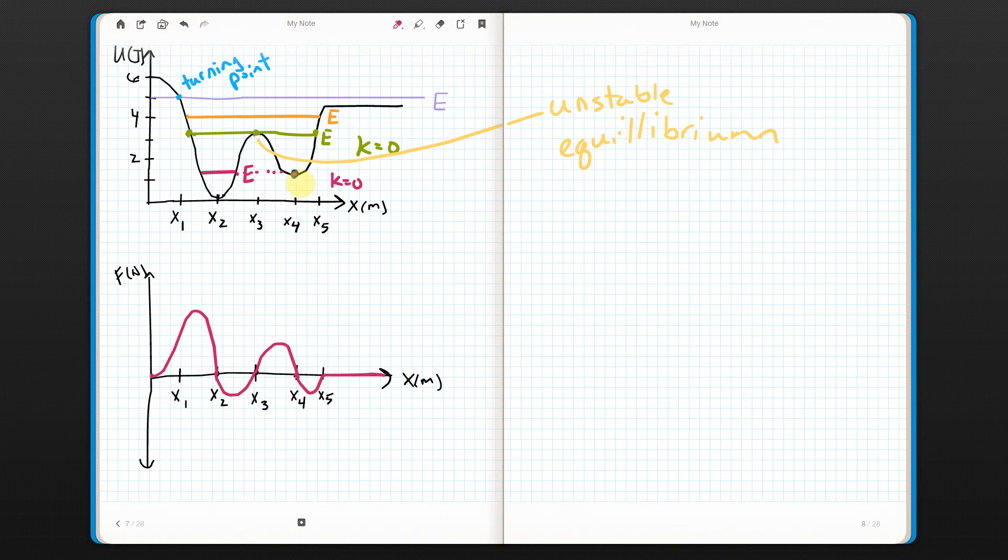So what you get here is if I put a particle here, it doesn't want to leave its position. It would stay there. That's called a stable equilibrium.